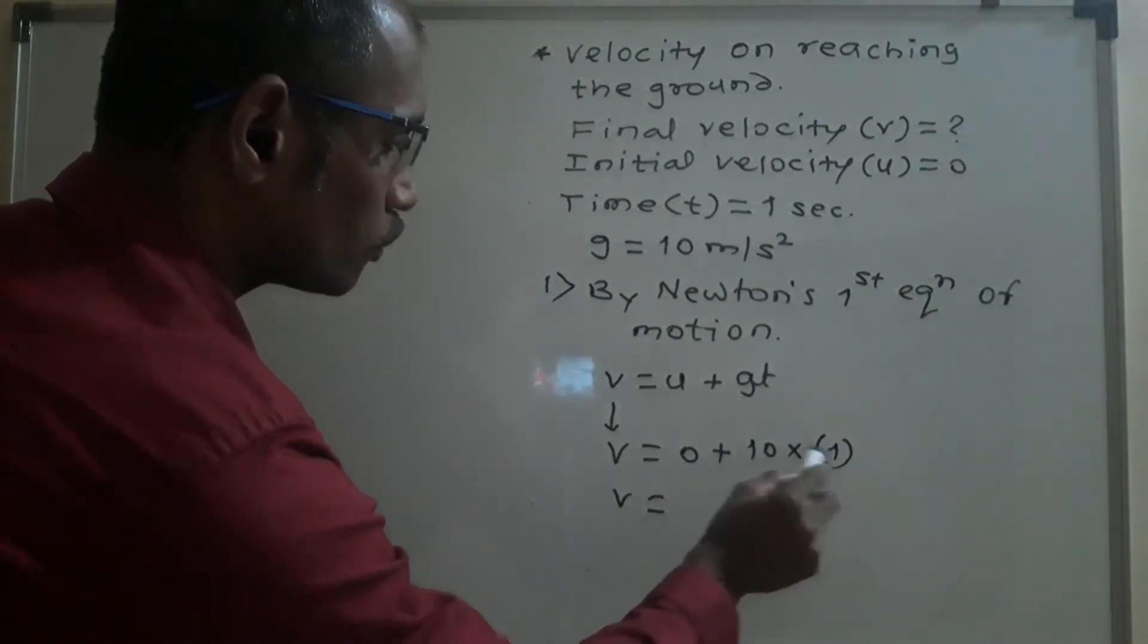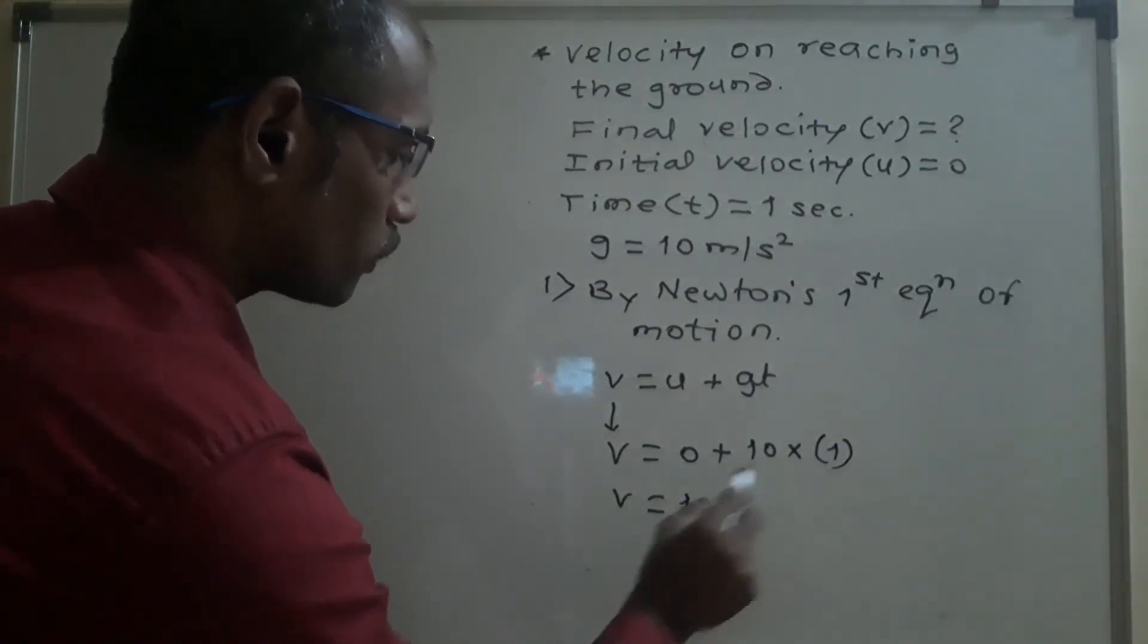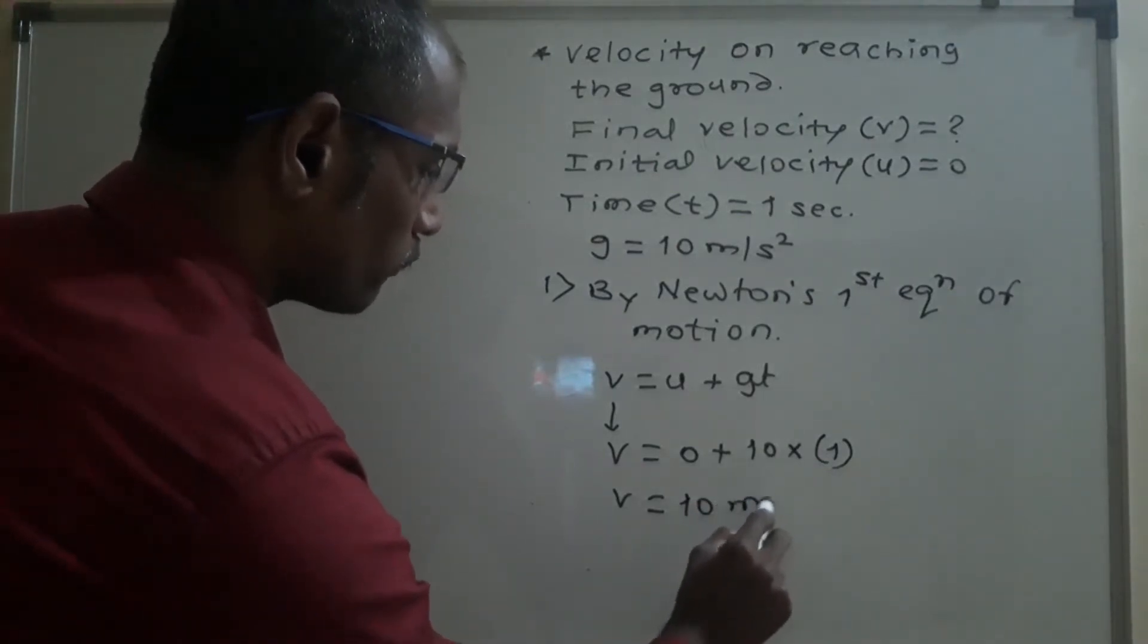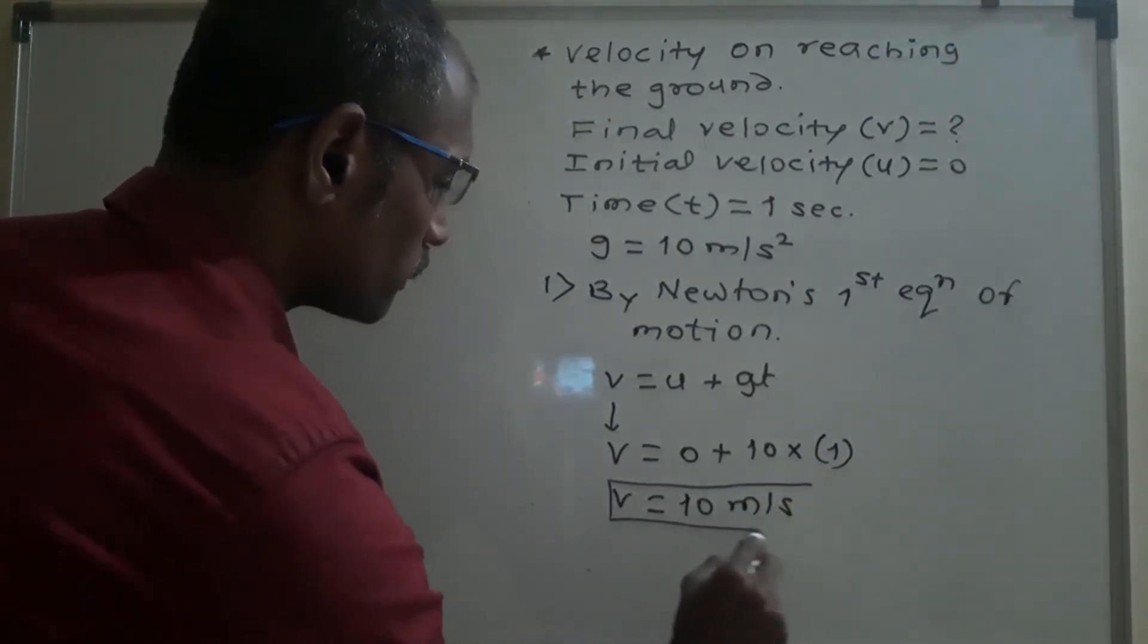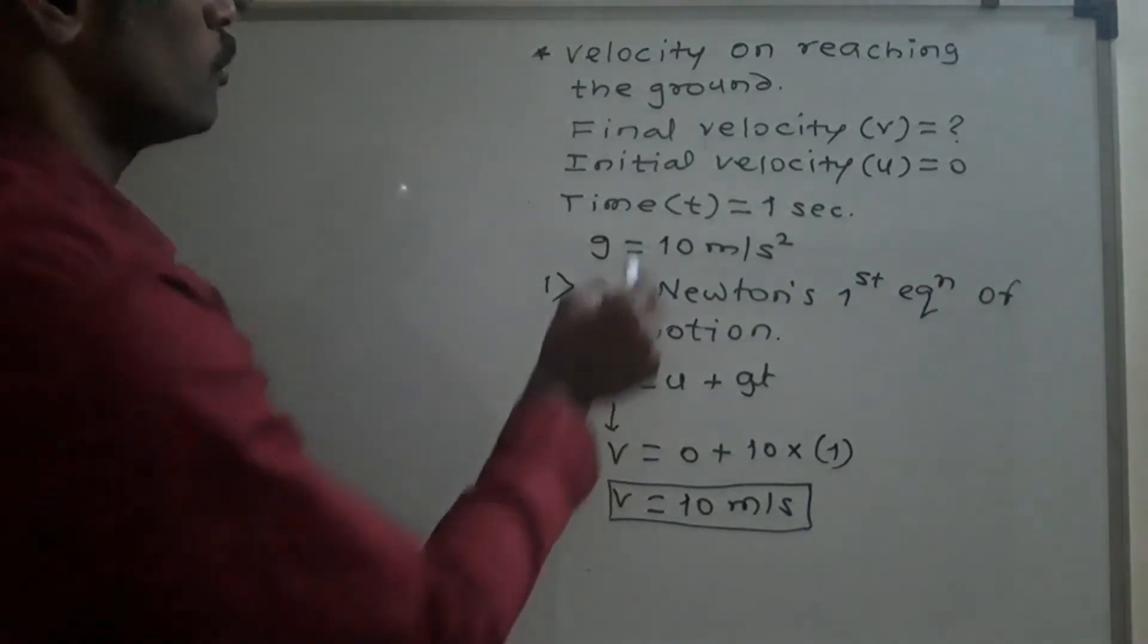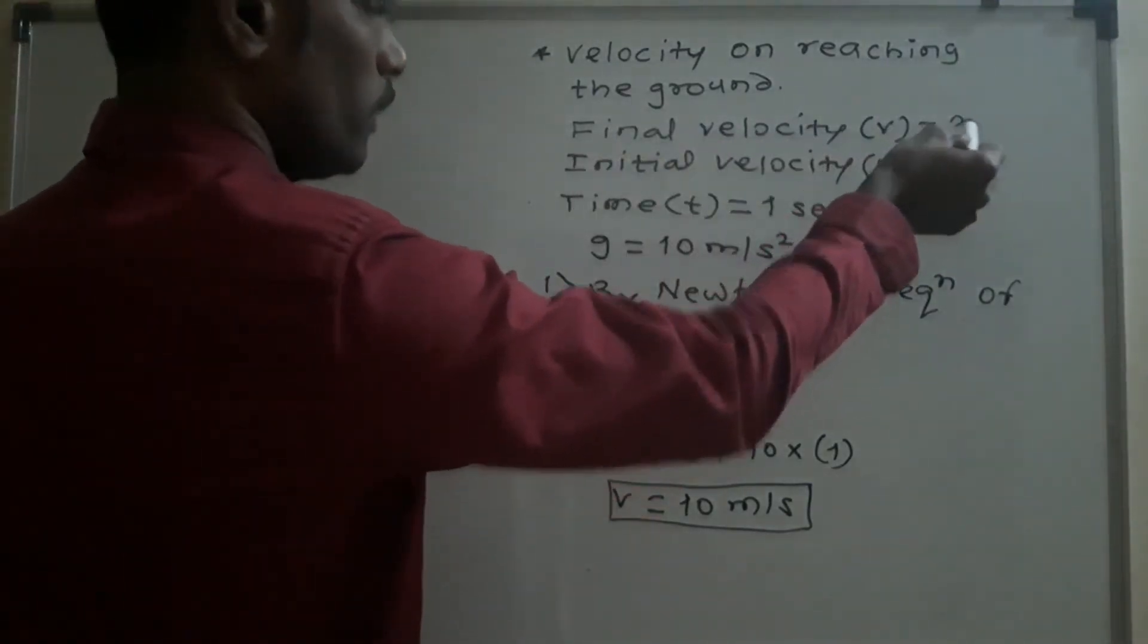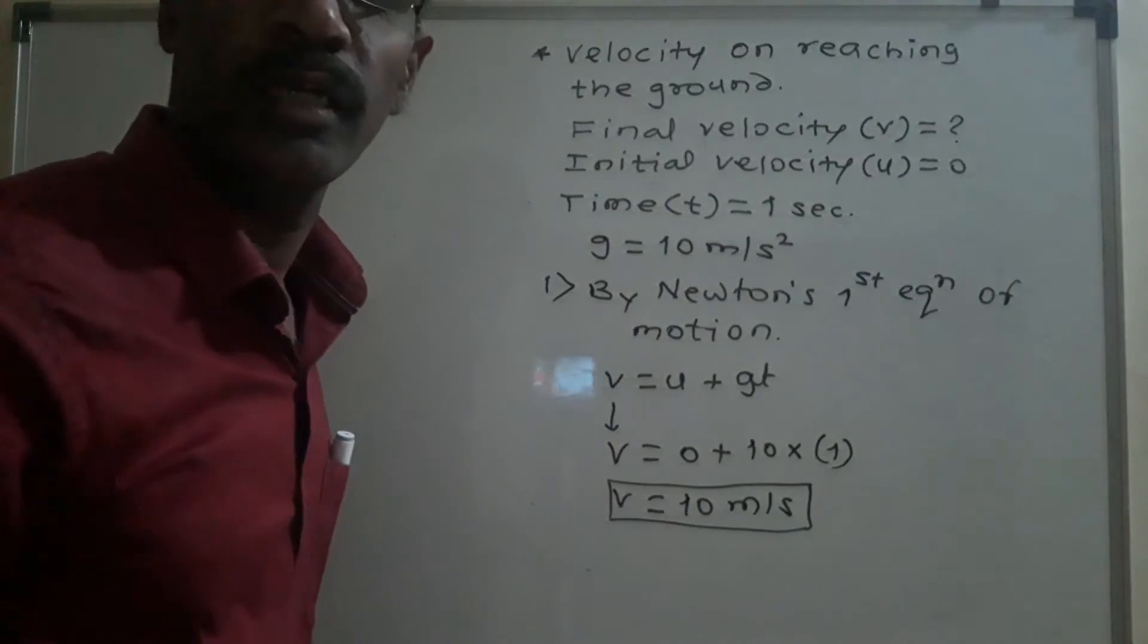Therefore our final answer, v is equal to 10 meter per second. This is value of final velocity v.